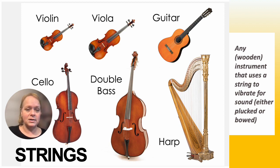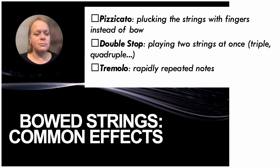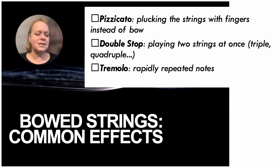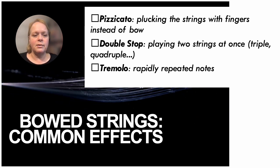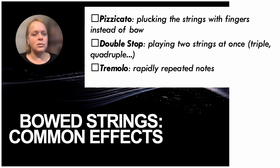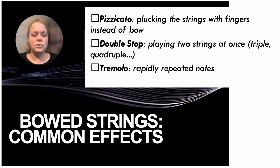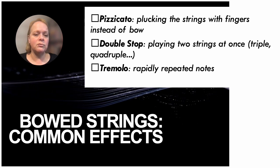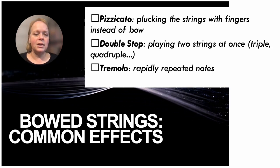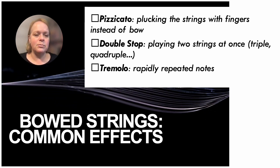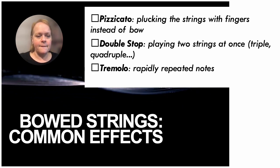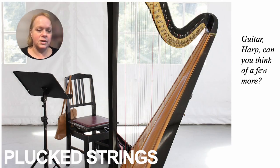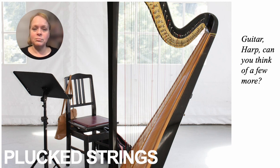There are common bowed string techniques and effects. Pizzicato is when you pluck the strings with your fingers instead of the bow. There's also a double stop — playing two strings at once — and triple or quadruple stops. Tremolo is rapidly repeating notes. Plucked string instruments include guitar, harp, mandolin, and others. Examples of all these techniques are in your module.